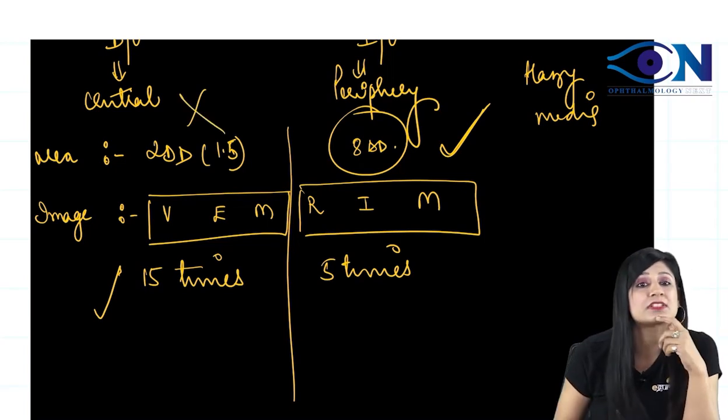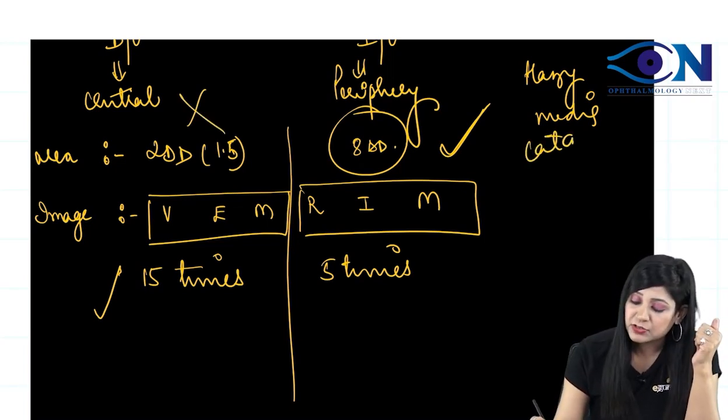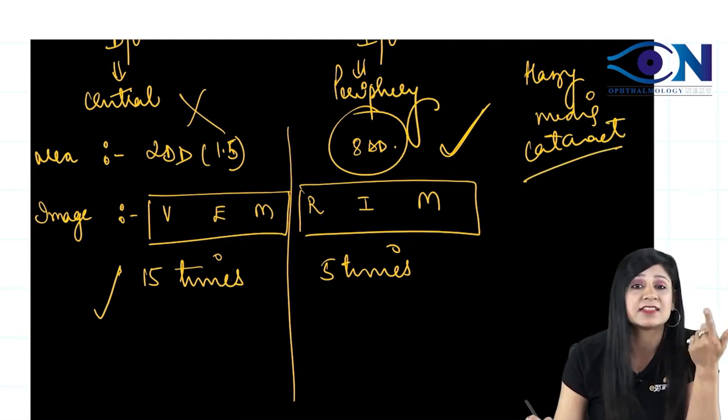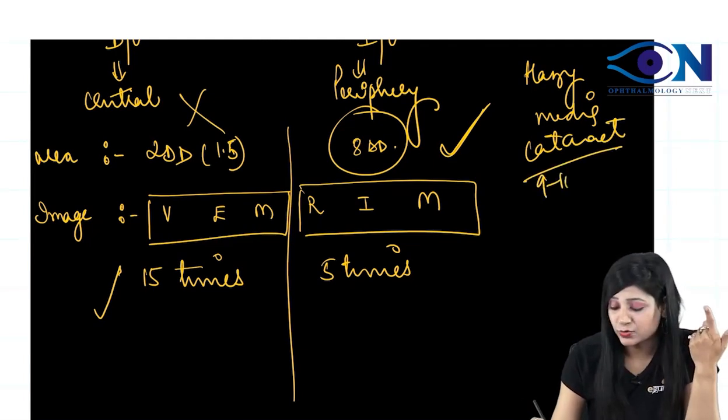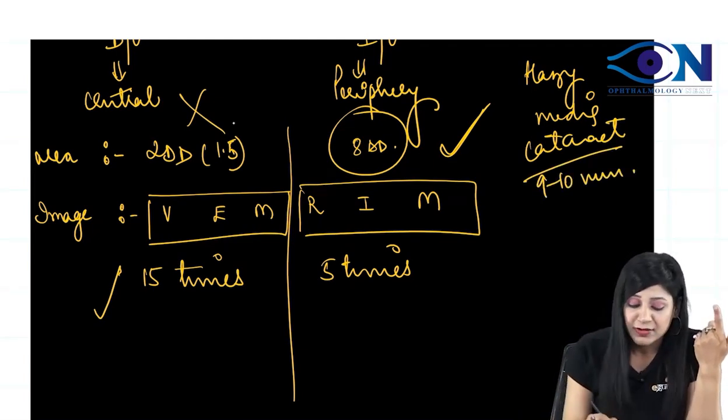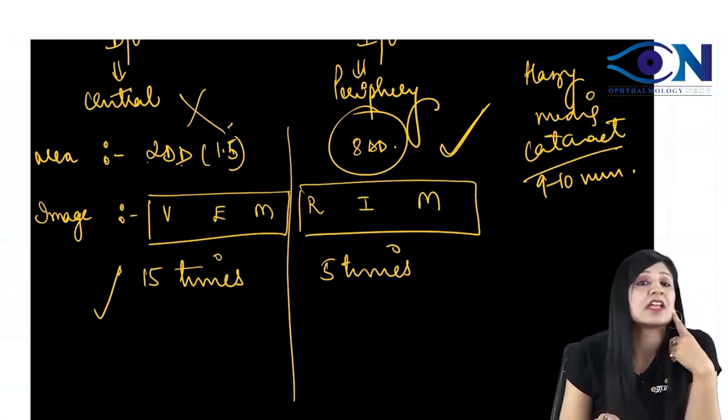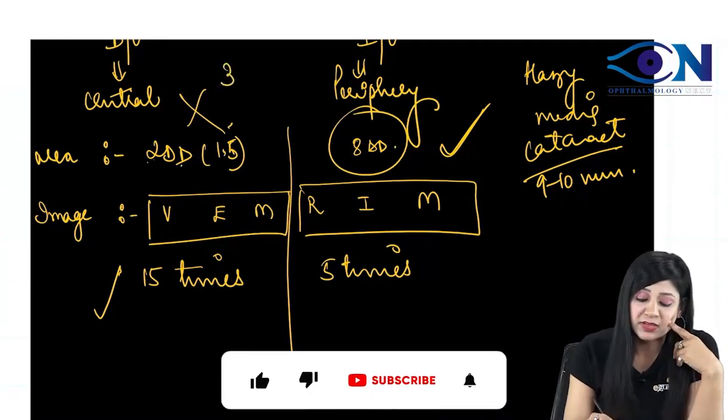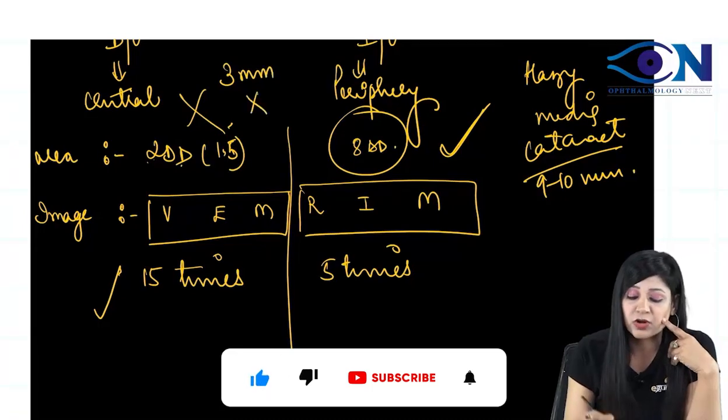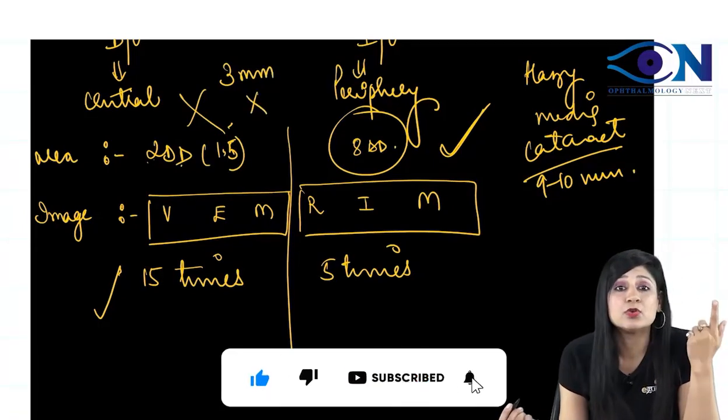I will not do this 2 disc diameter because suppose there is a cataract. Suppose there is a cataract, cataract is in the lens, lens diameter is 9 to 10 mm. And if I do this direct ophthalmoscopy, I will see 2 disc diameter, 2 into 1.5 means 3 mm. So, obviously, this will go behind the lens, I will not be able to see.